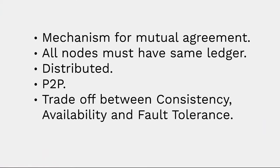Consensus mechanism is a mechanism for mutual agreement. It is required because there are distributed nodes operating from different geographical locations who do not know each other, so those nodes should have the same ledger — all nodes should maintain the same consistency, the same copy of the same data. Wrong data should not be present, therefore this consensus mechanism plays an important role in blockchain. It is a peer-to-peer network where different nodes communicate with each other via peer-to-peer messages.